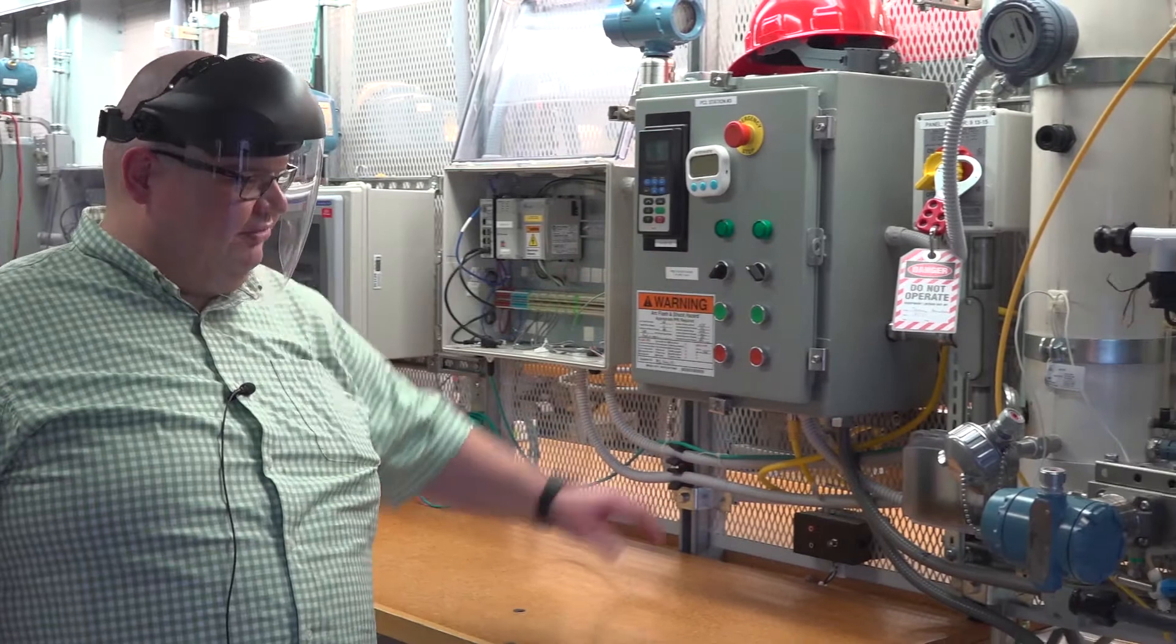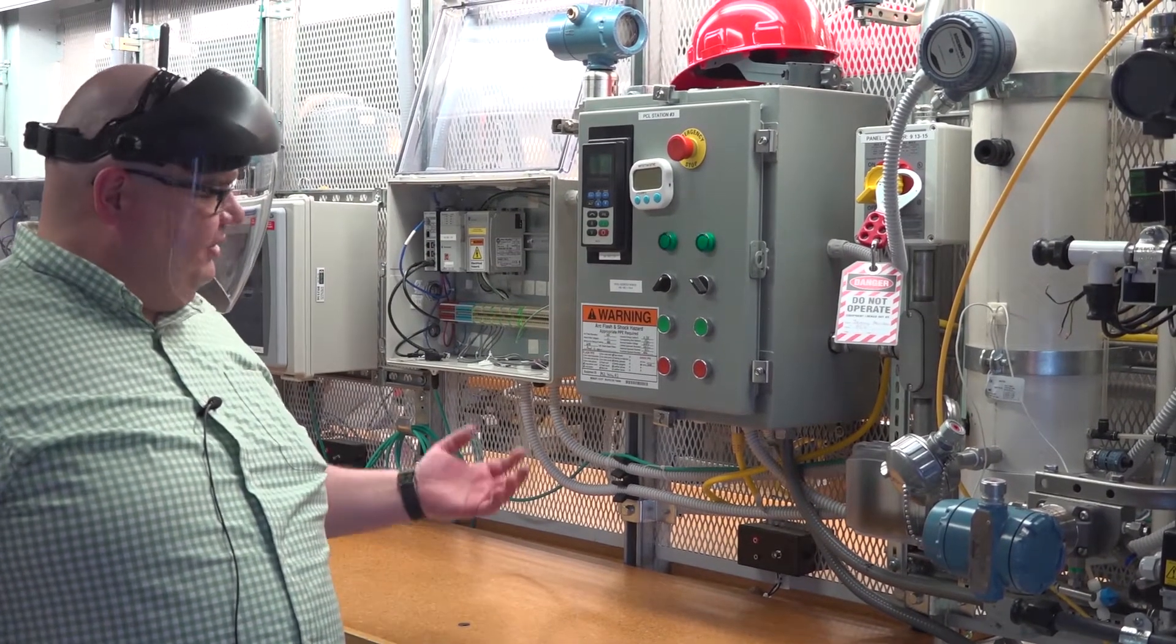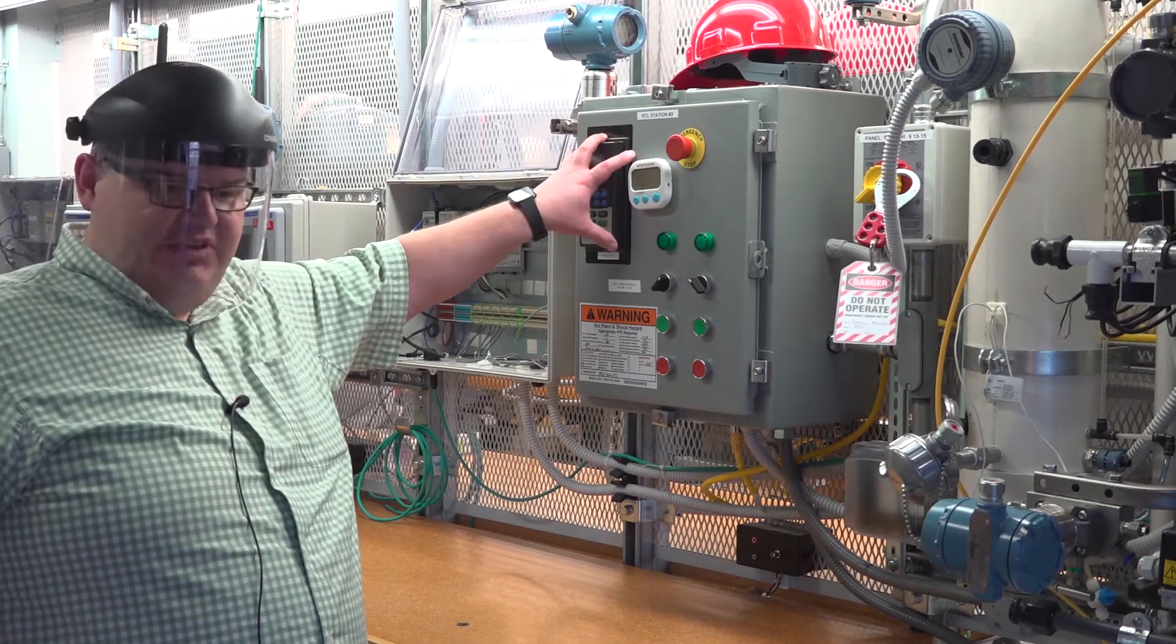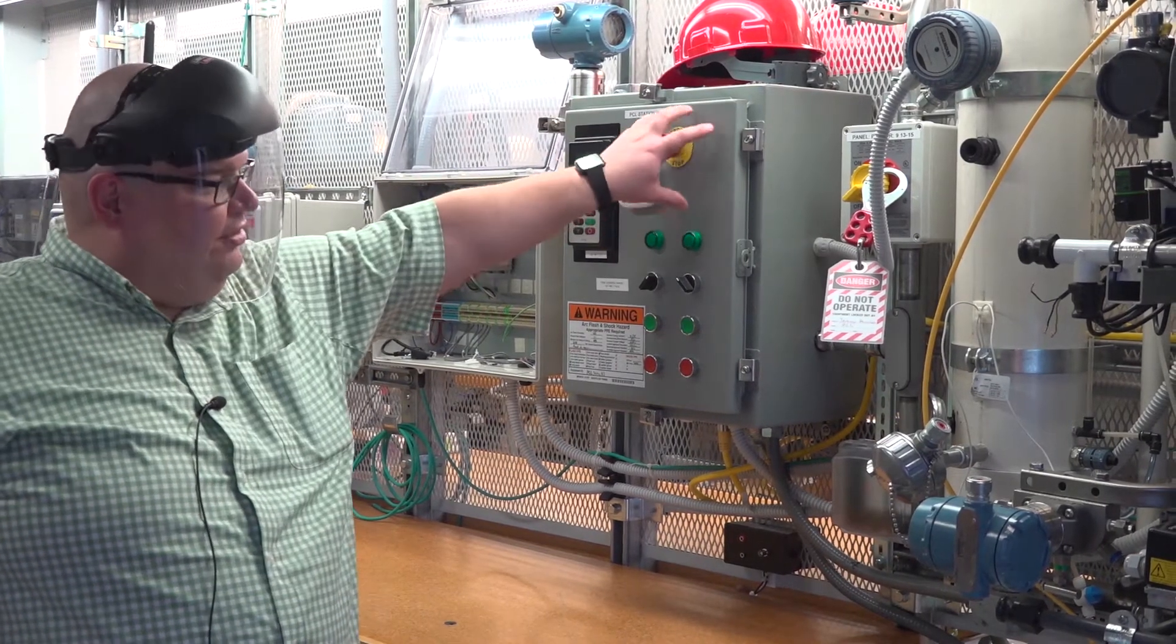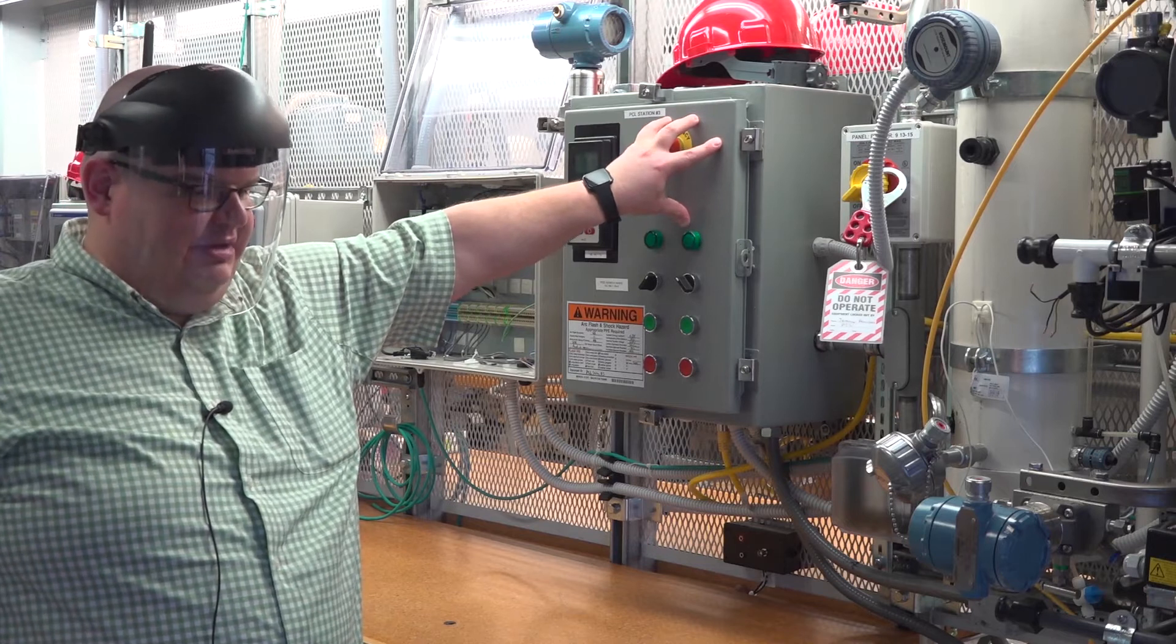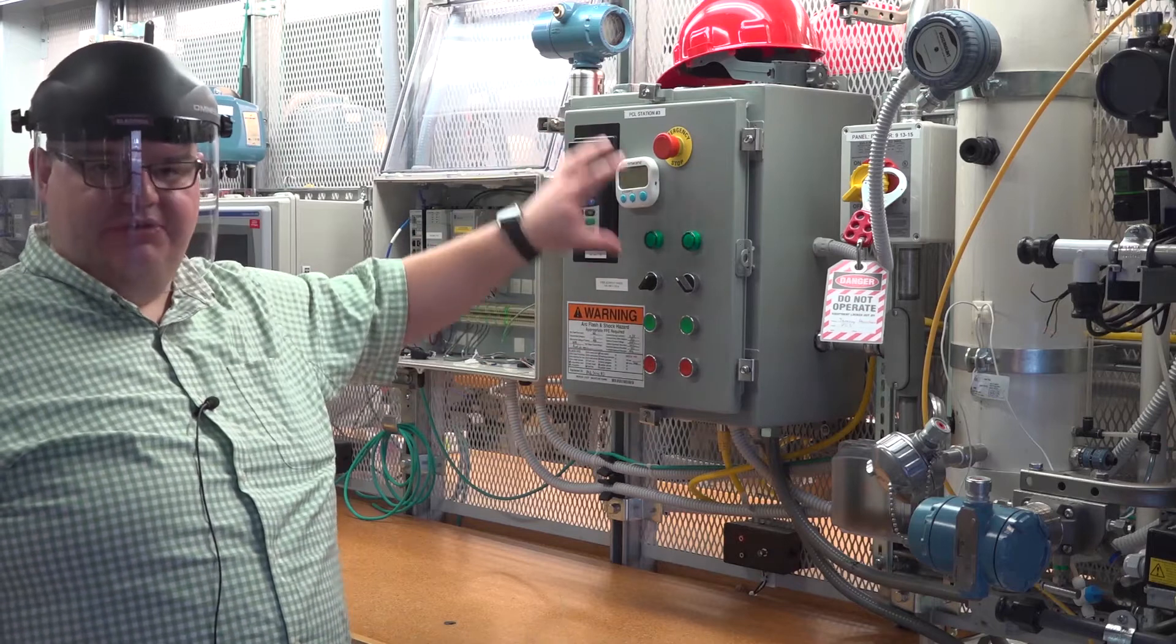Over here we have a motor control panel. Students learn how to wire and unwire this. You have a variable frequency drive, a VFD, that allows us to change the speed of a pump. We also have a line starter, which is a device that allows us to switch a pump on or off. Students learn how those work and how to wire them up.